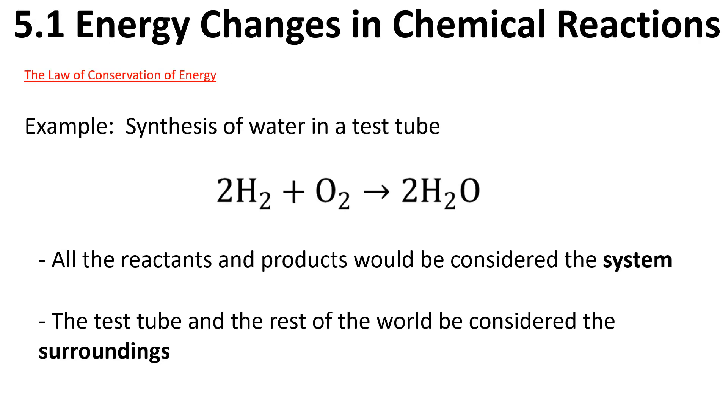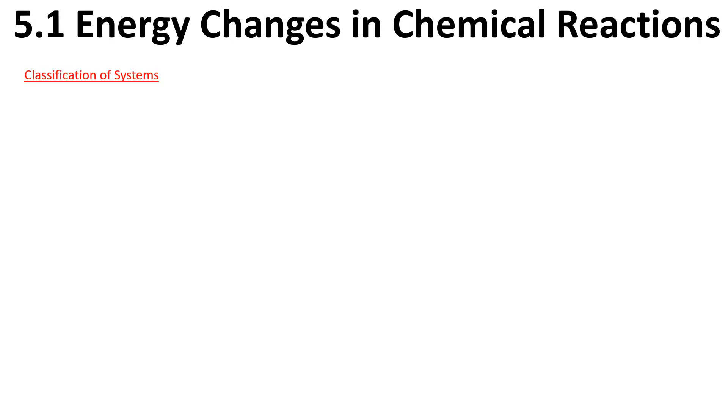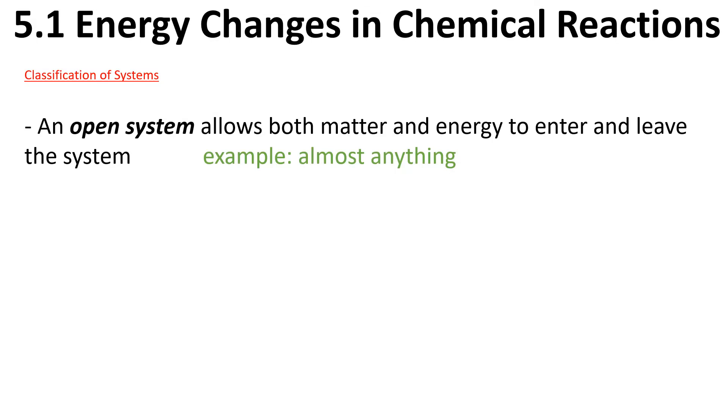We have three types of systems we might encounter. An open system allows both matter and energy to enter and leave the system. An example is a cup of coffee sitting out. You've got heat escaping it, so there's an example. Essentially, anytime energy is moving between one state to another or one place to another, it's probably an open system.